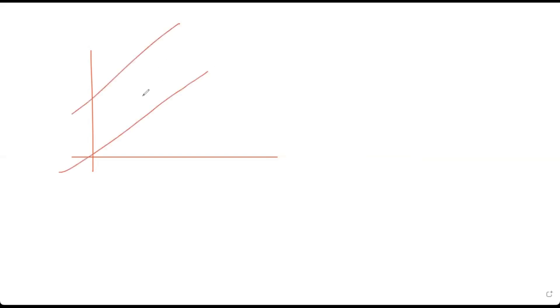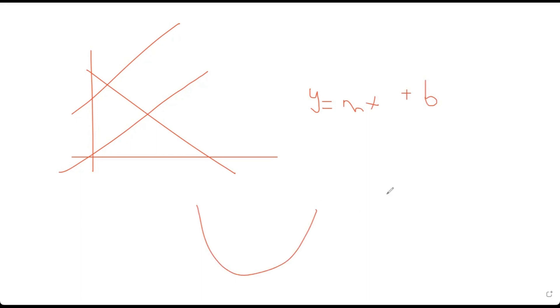Now let's go into functions. Functions are relationships between two variables, x and y mostly. I'm not going to go into the basics of functions, but how they are applied in calculus. A linear function is a line — y = mx + b is the slope-intercept form. Parabolas are quadratic equations. We have square roots, exponential equations, logarithmic functions which are inverses of exponential, and absolute value, which is also pretty important.